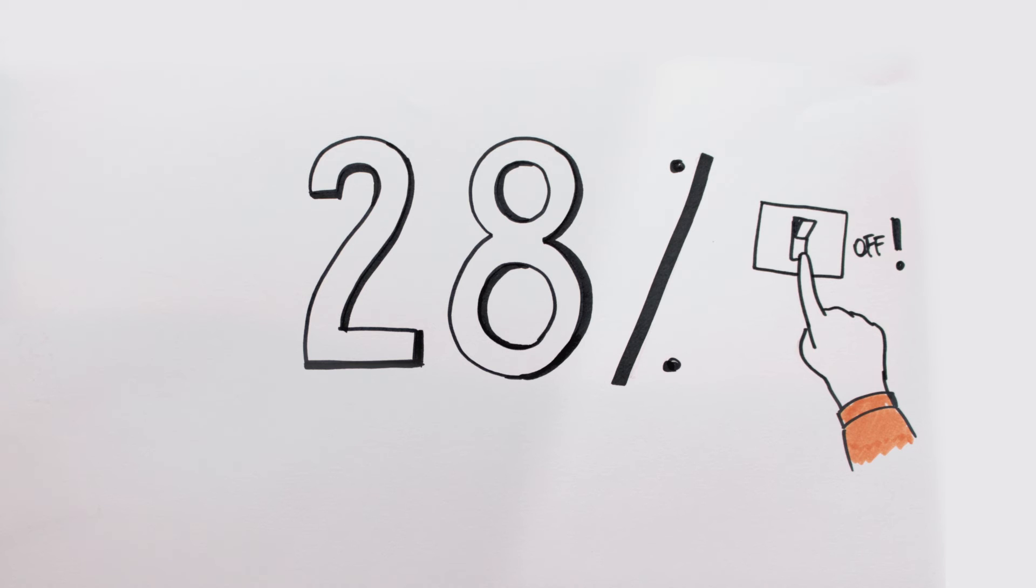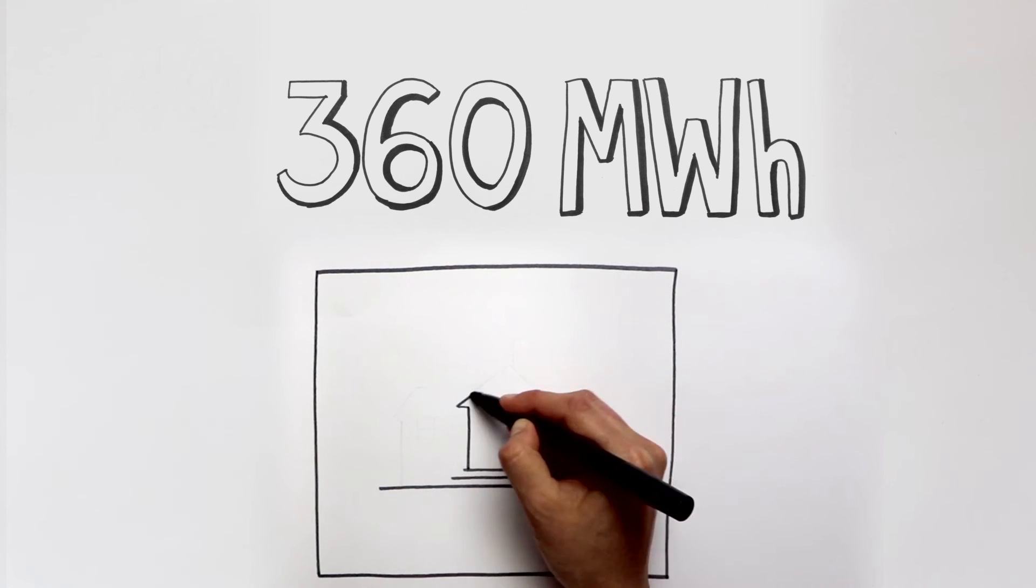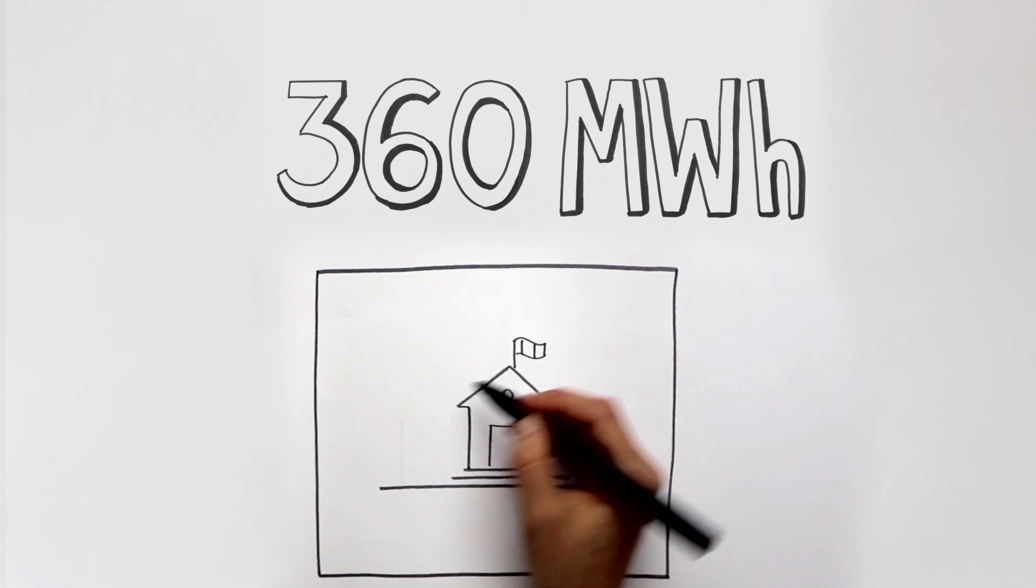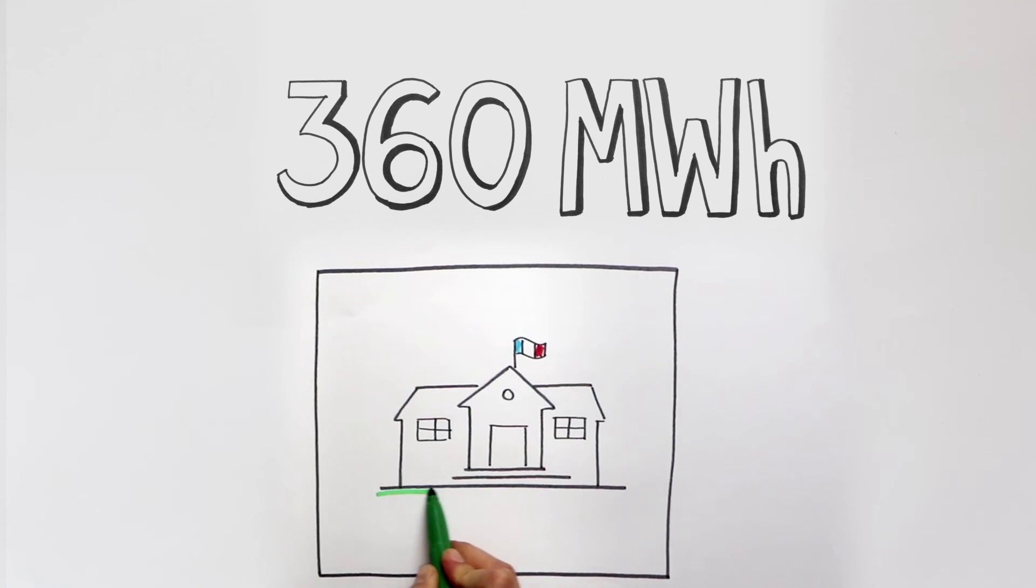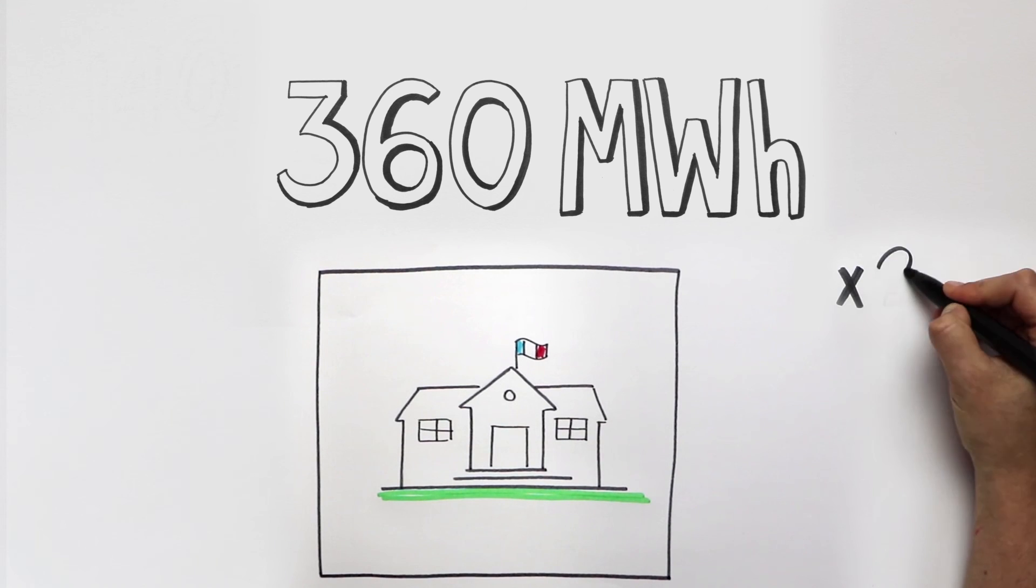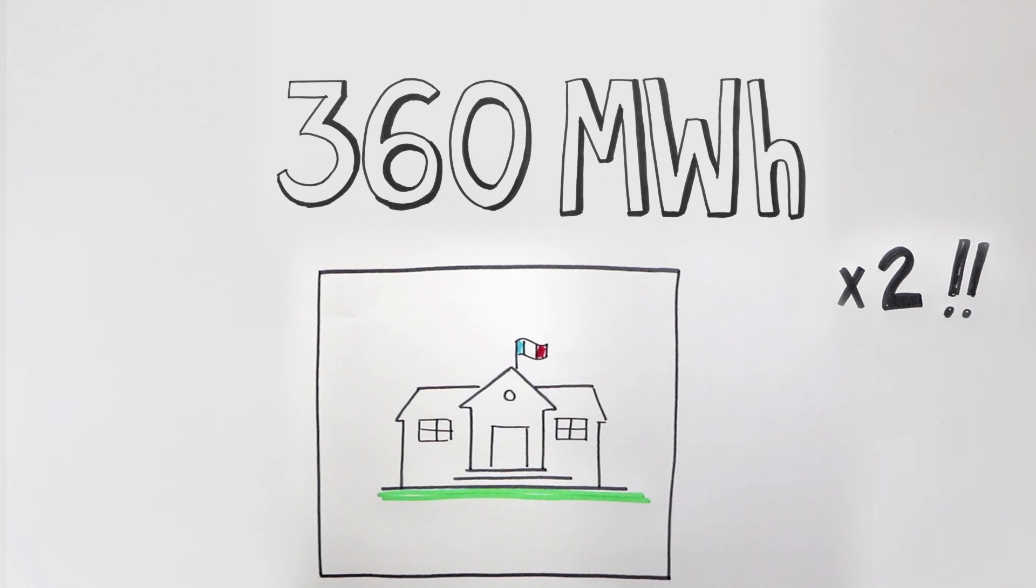If we could get all the people in the Paka region to join in, we could save up to 360 megawatt hours of energy between 6pm and 8pm. That's the same as the annual consumption of two elementary schools.